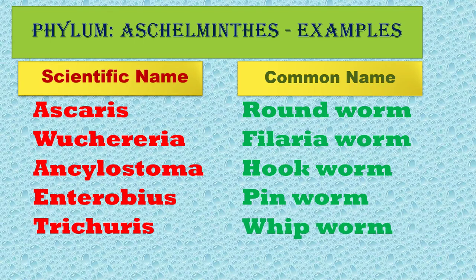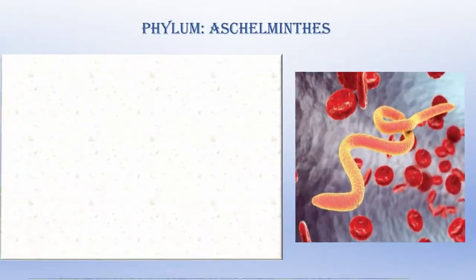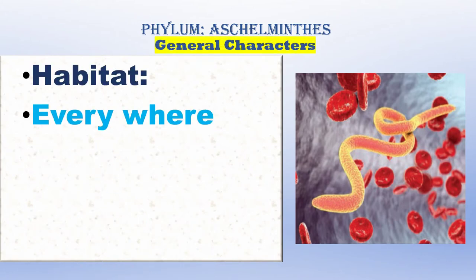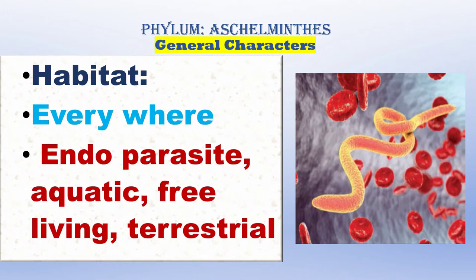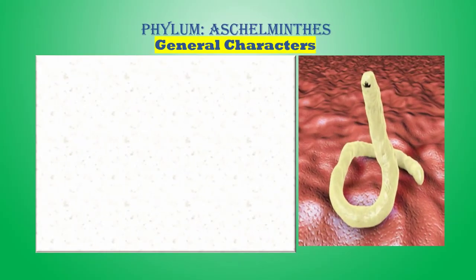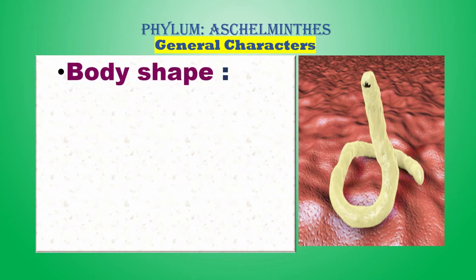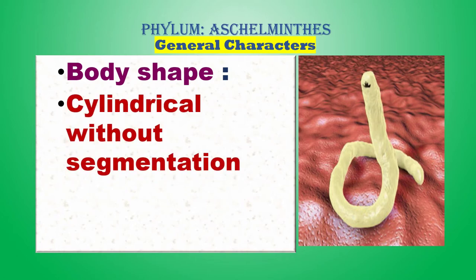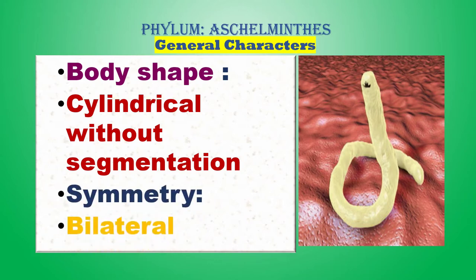Habitat — the living place. Aschelminthes live everywhere. Most are endoparasites living inside the human or animal body; some are aquatic, some are free-living, and some are terrestrial. The body shape of Aschelminthes is round and cylindrical, without any segmentation — unlike Annelida, it does not have segmentation. Symmetry is bilateral: cutting the body from top to bottom gives two equal halves.